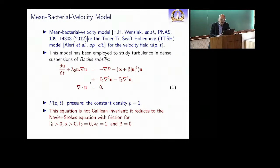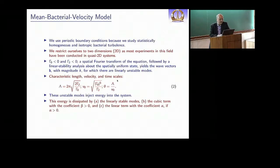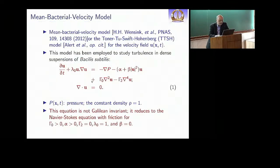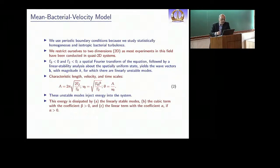I will restrict myself to the incompressible case, so divergence u is always zero even if I don't say it. I can get rid of the pressure suitably, therefore, and use a constant density ρ equal to one. I note that this equation is not Galilean invariant except in some particular limit when it reduces to the Navier-Stokes equation with friction. These coefficients γ₀ and γ₂—a spatial Fourier transform followed by some linear stability analysis will give you the wave vectors k for which there is a linear instability, which helps you to get some lengths.